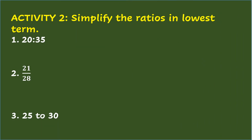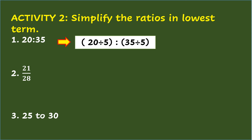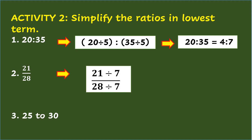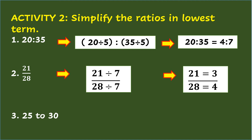Activity 2. Simplify the ratios in lowest term. Number 1: 20 is to 35. Since the GCF of 20 and 35 is 5, dividing 20 by 5 is 4, and 35 divided by 5 is 7. Therefore, the lowest term of 20 is to 35 is 4 is to 7. Number 2: 21 over 28. The GCF of the numerator 21 and denominator 28 is 7, so 21 divided by 7 is 3, and 28 divided by 7 is 4, so the lowest term of 21 over 28 is 3/4.